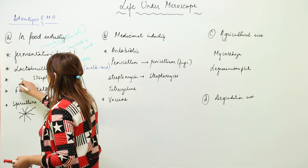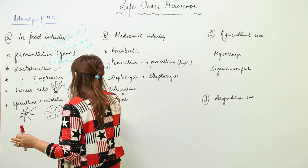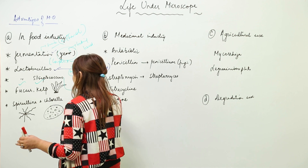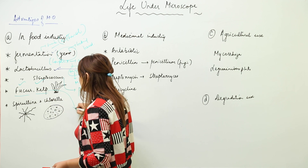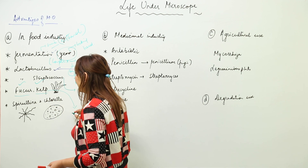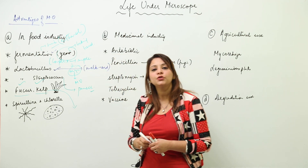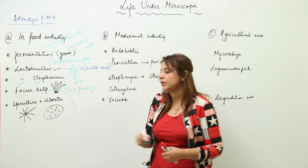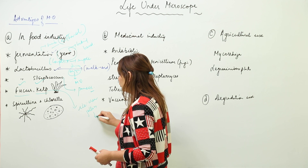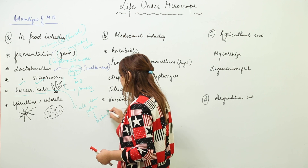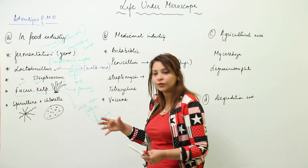Likewise, by using Lactobacillus and Streptococcus, we can make paneer and cheese as well. There are also certain algae — Fucus and kelp — that are used as thickening agents in the making of ice creams and jellies.